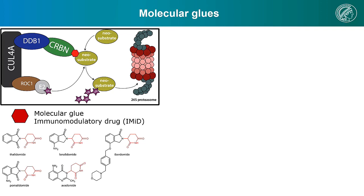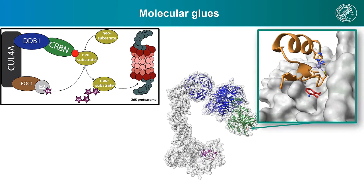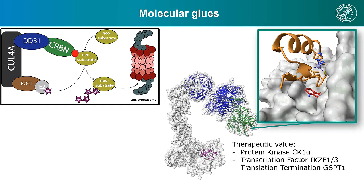All of these molecules are able to bind to Cereblon, and by binding, these molecules remodulate the substrate recognition interface of Cereblon with their protruding solvent-exposed moiety. This then leads to the recruitment of non-endogenous or neo-substrates. These neo-substrates include therapeutically relevant targets such as CK1-alpha or the transcription factors Ikaros and Aiolos, whose degradation explains major parts of the efficacy in the treatment of multiple myeloma.